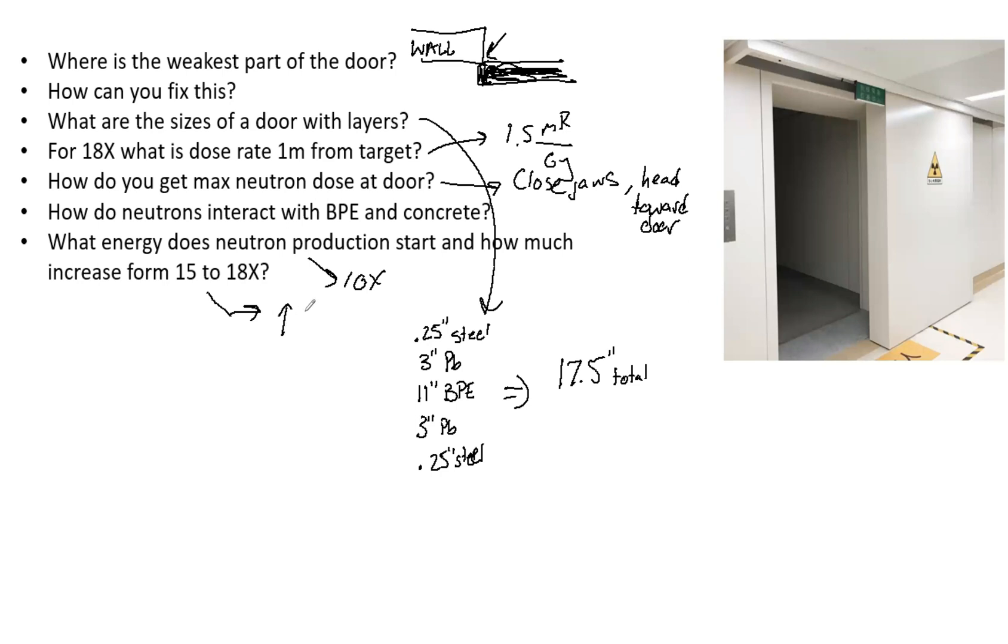Some other little things to remember that I think are very good and show that you've done shielding and you know the numbers: neutron dose increases 75% when the jaws are closed compared to when they're open. The jaws really play a major factor in neutron production.